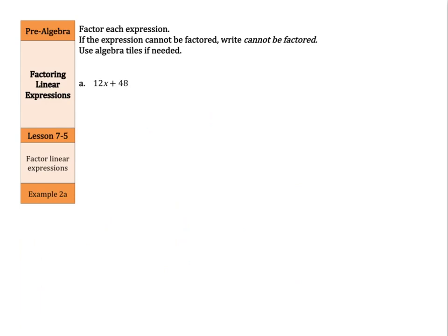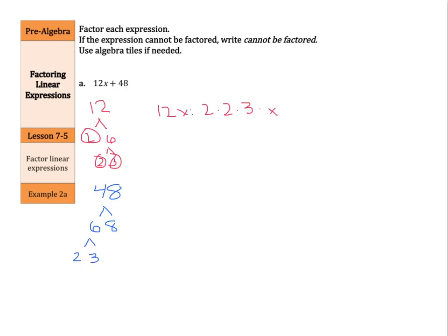Let's look for the greatest common factor of 12x and 48. Well, 12 is 2 times 6, and 6 is 2 times 3. So for my 12x, I have 2 times 2 times 3 times x. And for my 48, we have 6 times 8. 6 is the product of 2 and 3, 8 is the product of 2 and 4, and 4 can be broken into 2 and 2. So with my 48, there are four 2s: 2 times 2 times 2 times 2, and a 3.